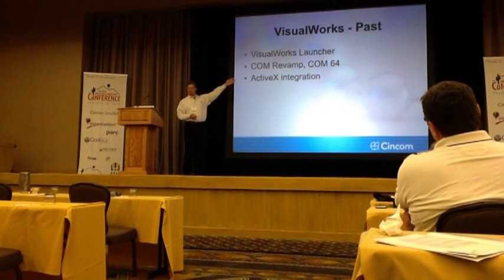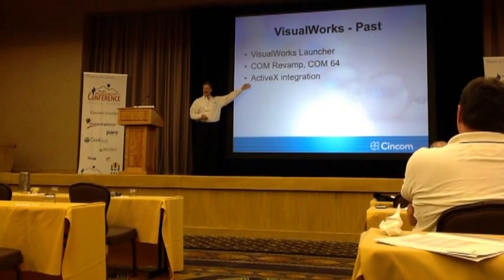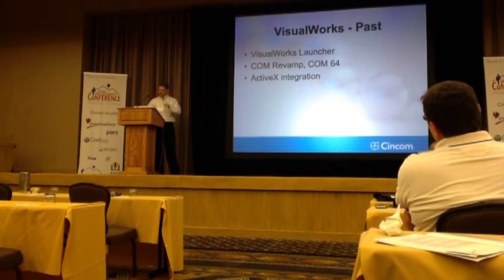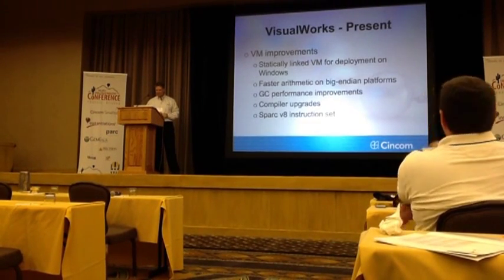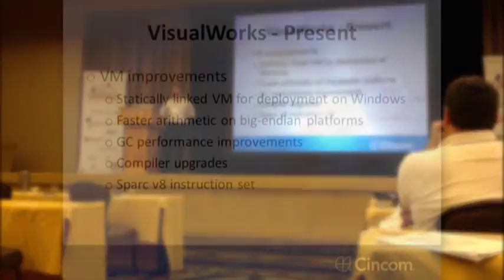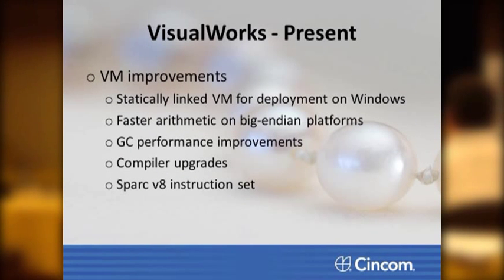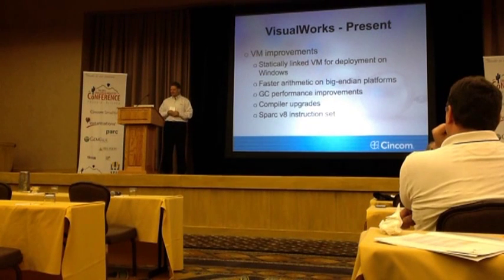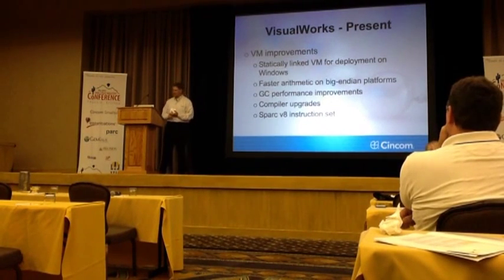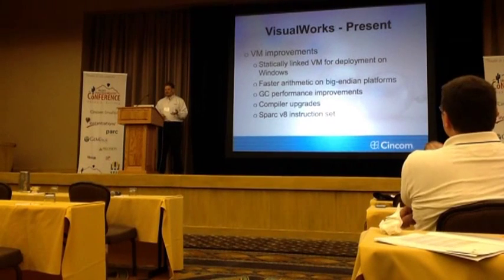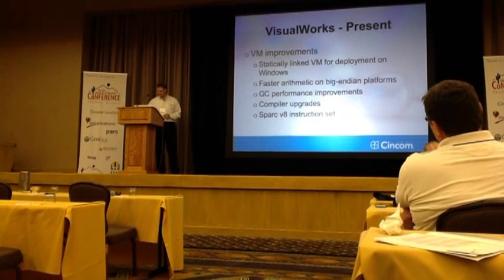In the past, we've completely revamped COM and had a 64-bit version of COM. We've integrated ActiveX pieces into VisualWorks, where you can put an ActiveX component and embed it in your windows. Recently, Microsoft changed their C++ library that you'd need to install. Some of our customers asked for the option of having that linked together so they don't have to worry about what Microsoft changed — so that's something we've delivered. We have faster arithmetic on our 64-bit platforms. We've made more changes to garbage collection, a number of compiler upgrades, and in this release we're using the new V8 construction set.